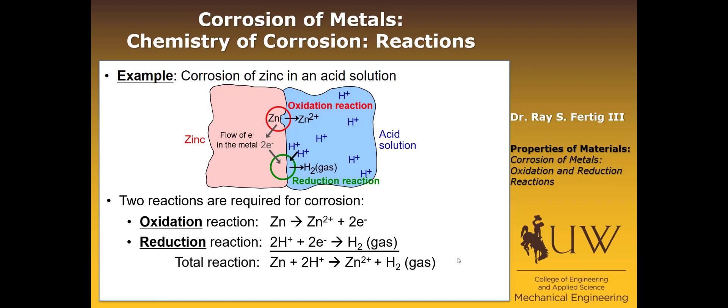A couple more just real brief definitions. Wherever the oxidation reaction is occurring, that's referred to as the anode. So where the metal is giving up its electrons, that's the anode. Where the electrons are recombining with whatever other material they're recombining with, that's called the cathode. So that's pretty much the basics that are going to be needed as we go forward discussing corrosion reactions in metals.